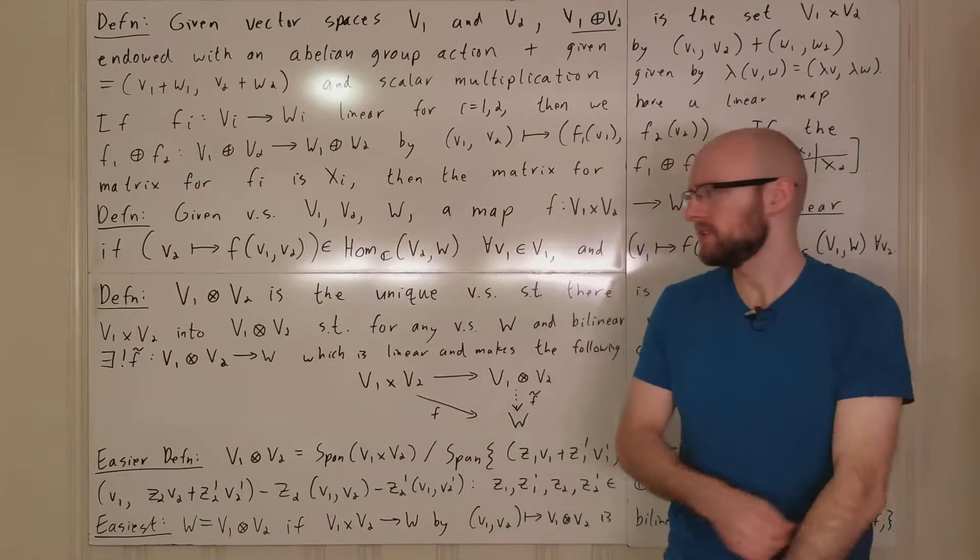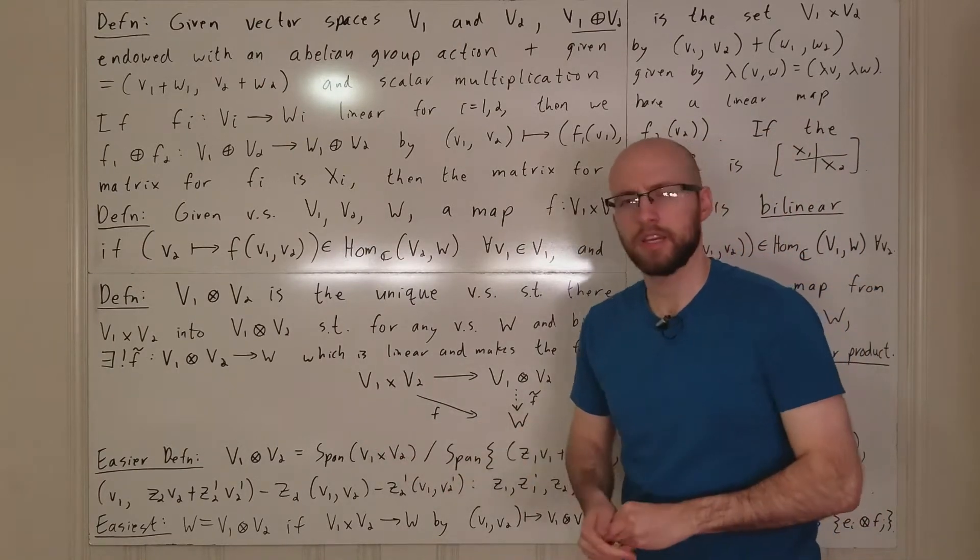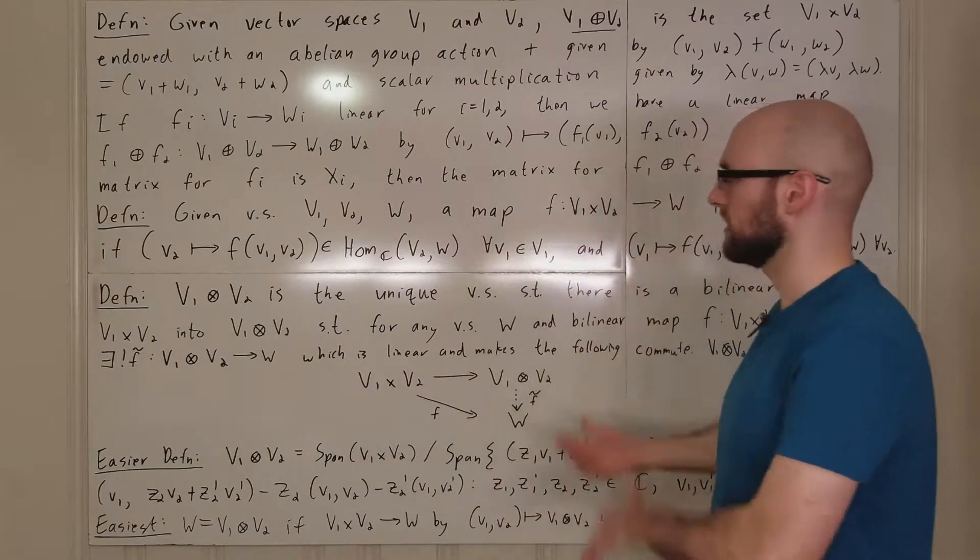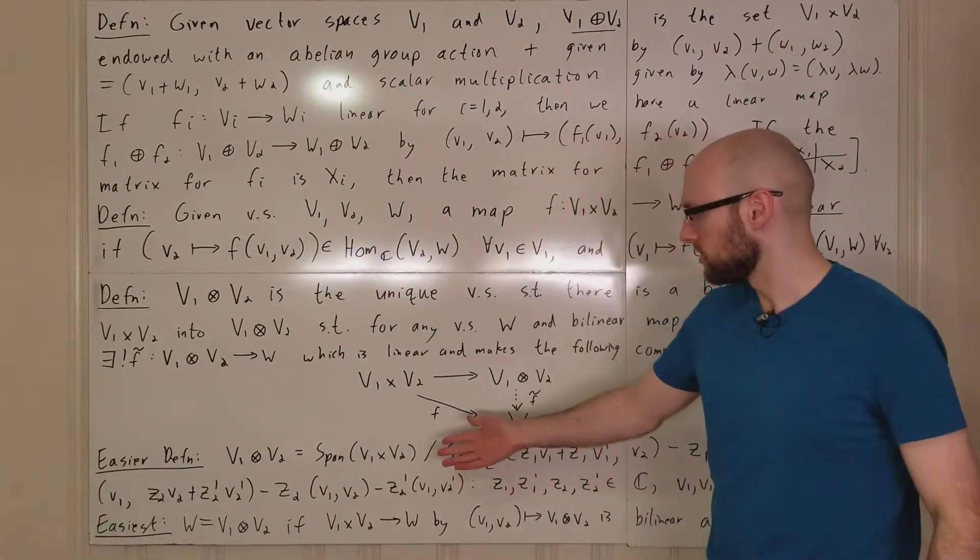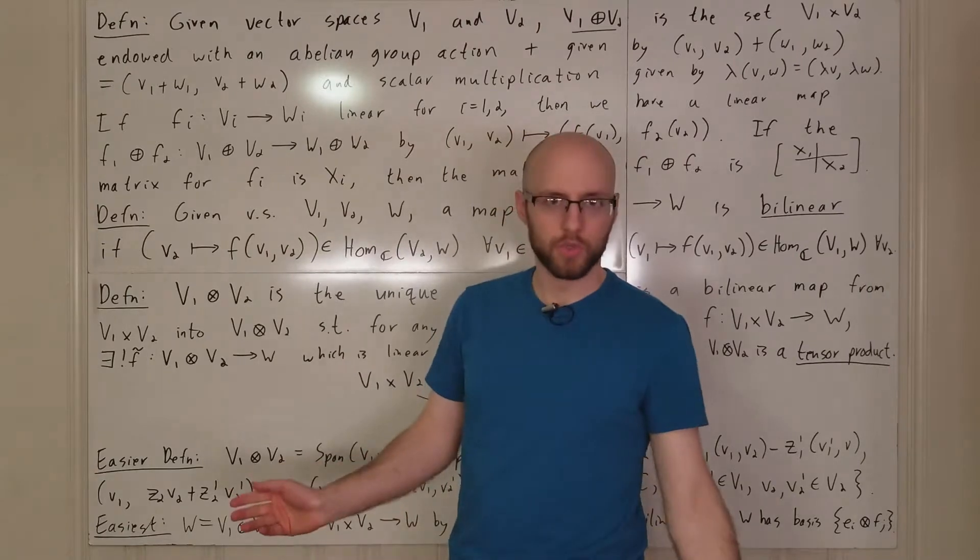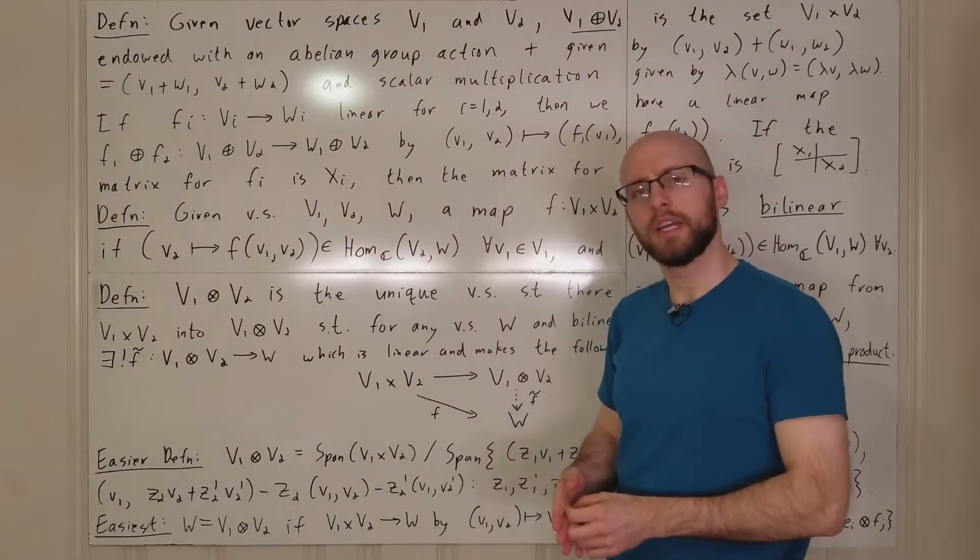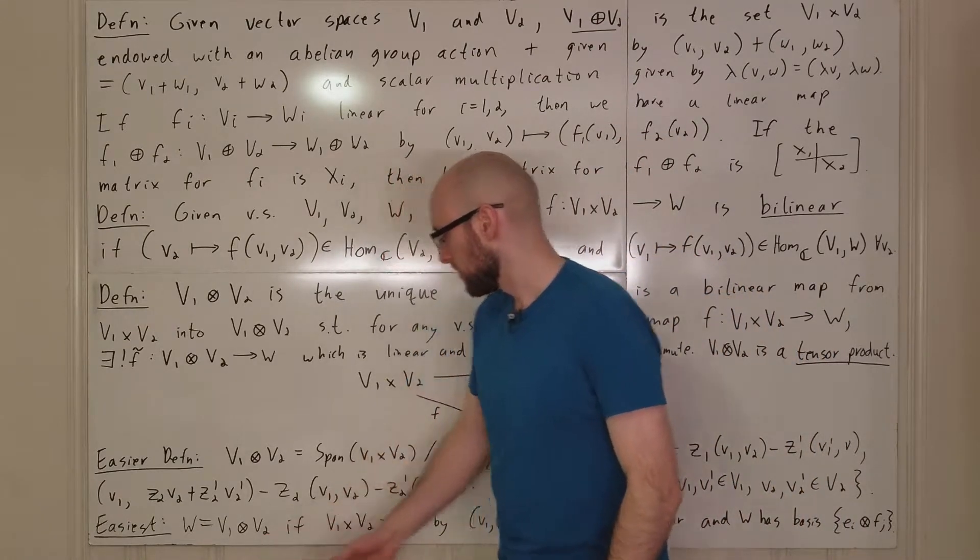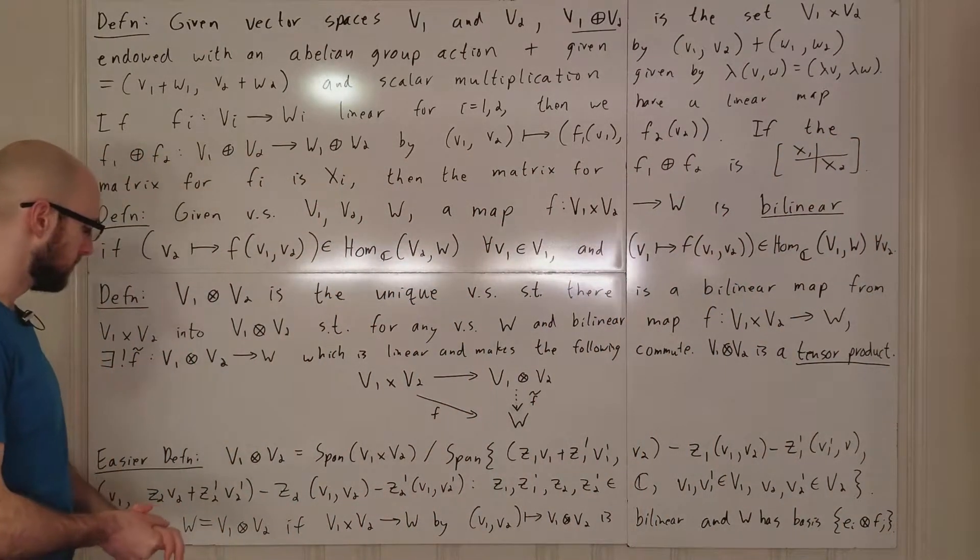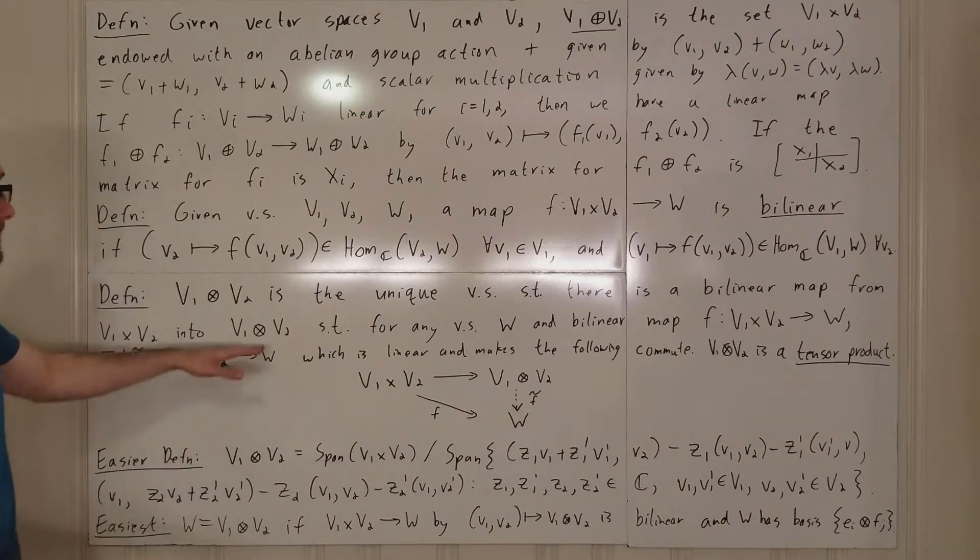But the easiest definition, and this is the one that I've actually learned before, and it's the easiest one where you can start working with tensor products and actually have an idea of what's going on is you just take the set V1 cross V2. Going from V1 cross V2 into this tensor product is going to be bilinear again. So if you have a linear combination here, then you can break it up and you have to, if you have a linear combination here, you can break it up.